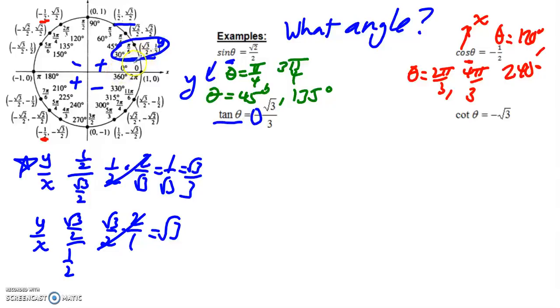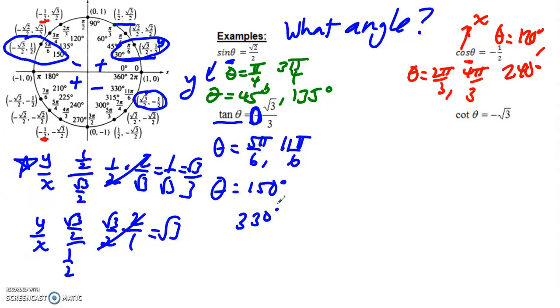This angle is a multiple of 30 in the second quadrant, and this angle is a multiple of 30 in the fourth quadrant because the tangent is negative there. That's how I know I want those quadrants. So it looks like my answers in radians would either be 5π/6 or 11π/6. And in degrees, my answers would be either 150° or 330°.